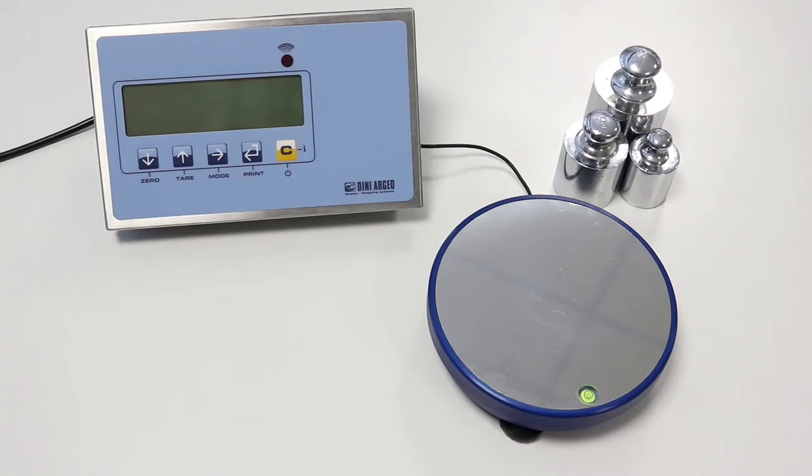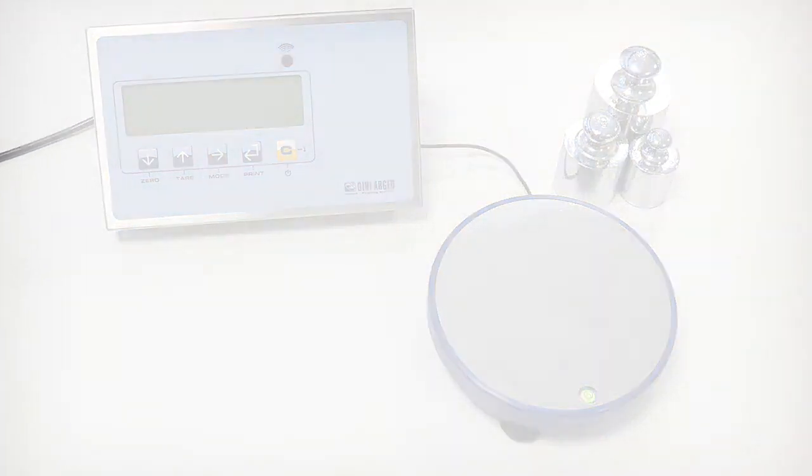Before starting the programming, in order to obtain the best performances, we suggest to correctly set the scale level. On all Dinear Geo scales, you have the bubble to do it easily. Another suggestion, especially for weighing systems with many load cells, is to check the signal input before starting using the diagnostic menu.